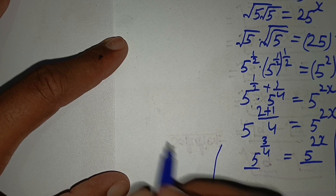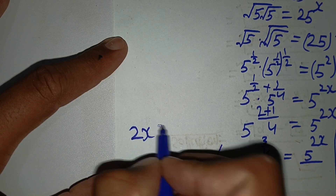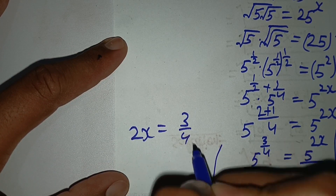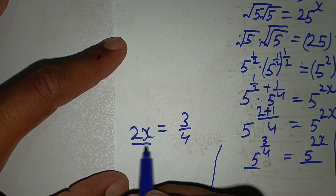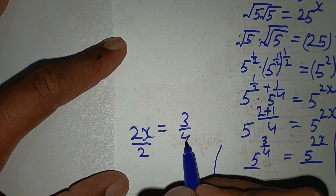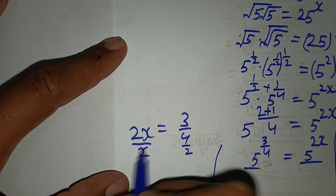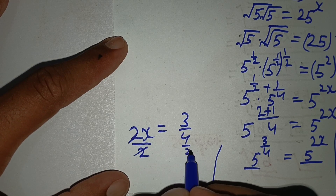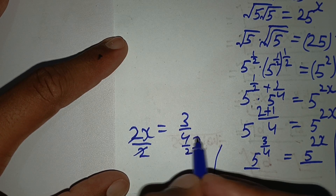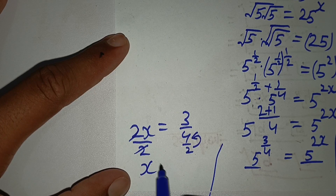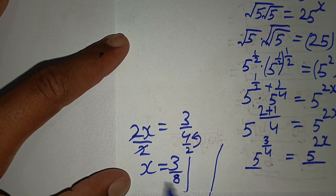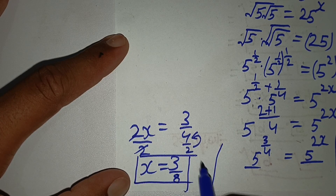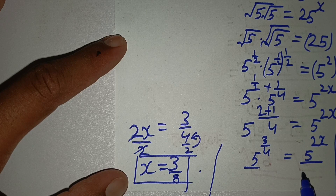So 2x equals 3 by 4. Dividing both sides by 2, the 2 gets cancelled and multiplies with 4, giving x equals 3 by 8. This is the value of x by using the second method. Thank you so much for joining us — please like this video and subscribe to my channel.